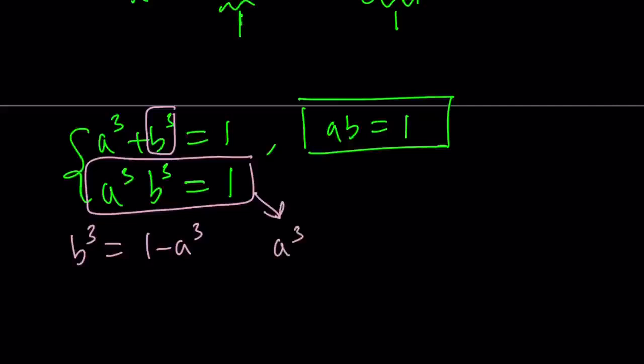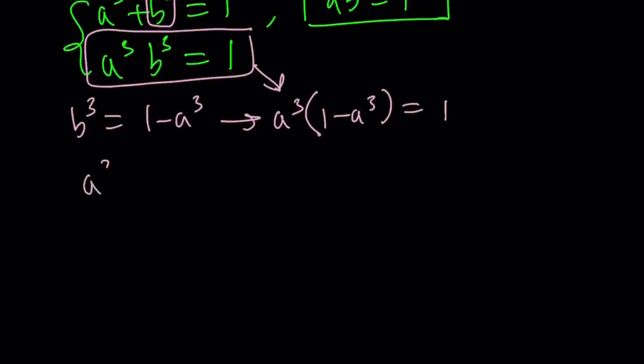Let's see, a³ times b³, which is 1 - a³ equals 1. And then, if you distribute, a³ - a⁶ = 1, and then this is a⁶ - a³ + 1.